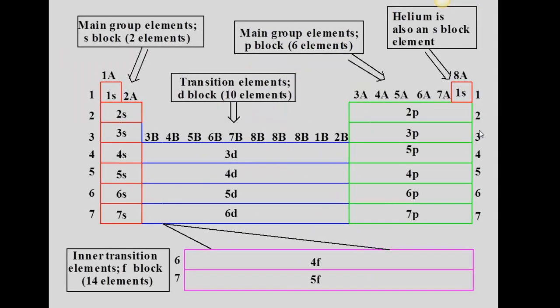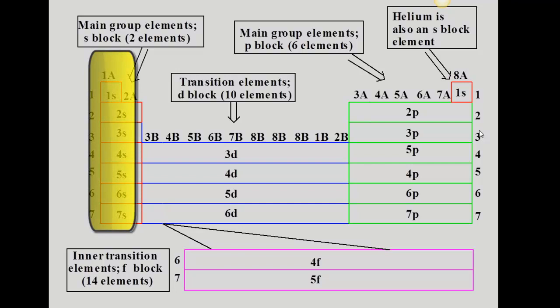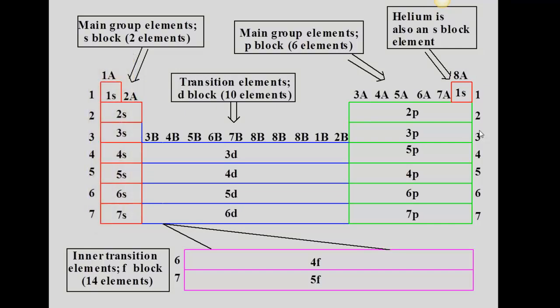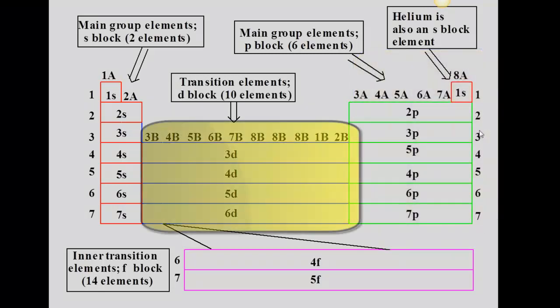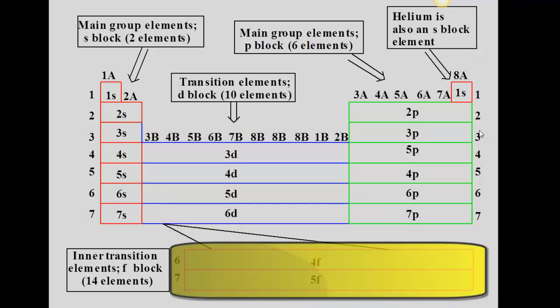Here's how electron configurations relate to the periodic table. The first two groups — groups 1A and 2A — correspond to the s orbital. Groups 3A to 8A correspond to the p orbitals. The transition metals, all the B groups, correspond to the d orbitals, and the inner transition metals correspond to the f orbitals.